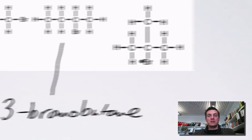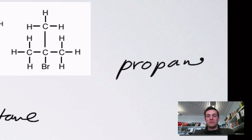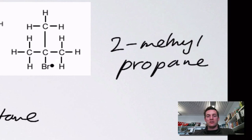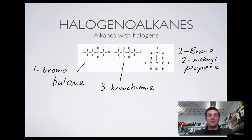This one is more complicated because as well as having a halogen attached it also has a branch, but we can cope because if we can name alkanes we can name this. The longest chain is three carbons with single bonds, so it's something propane. It has a methyl group attached to the second carbon — 2-methylpropane. But it also has a bromine attached to that second carbon, so the full name is 2-bromo-2-methylpropane.